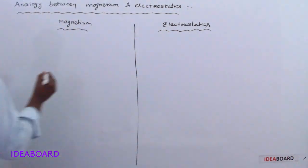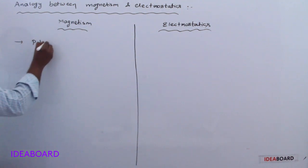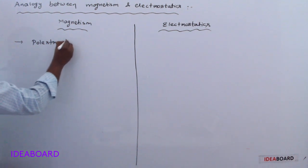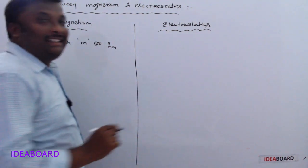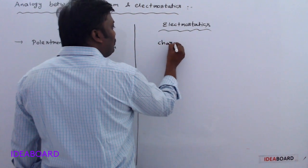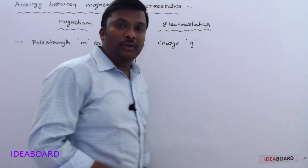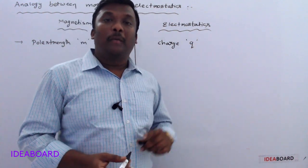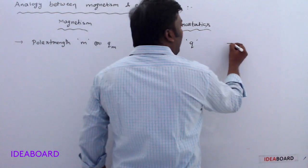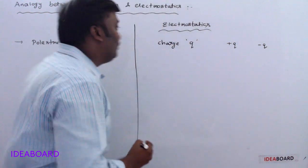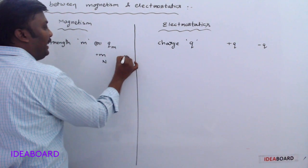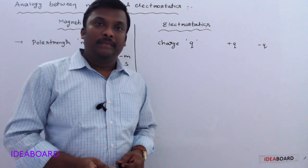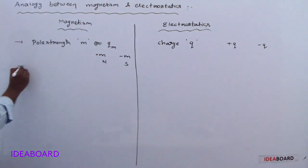In magnetism, pole strength — symbol we use is M or QM — is analogous to charge in electrostatics. We know there are two types of charges: positive charge indicated by +Q and negative charge indicated by −Q. Similarly, in pole strength, +M indicates the north pole and −M indicates the south pole.